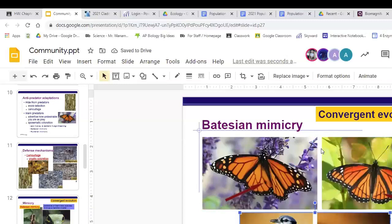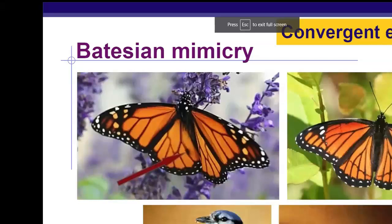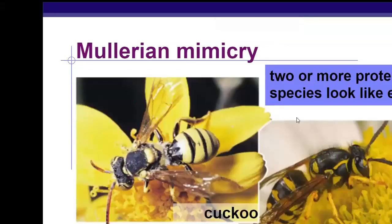This is also an example of convergent evolution — when two organisms are not related but live under the same environmental stresses, and so over time have evolved similar traits. Divergent evolution would be when related organisms live in different environmental stresses, so they separate and evolve separate traits. Müllerian mimicry is when two or more protected species look like each other — they both have some harmfulness to them. You can see the warning signs of the bee and the wasp, for example.